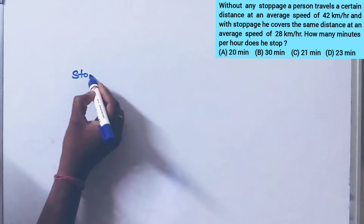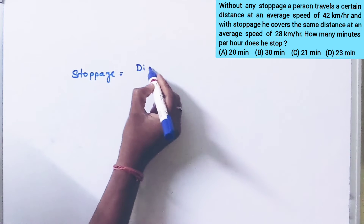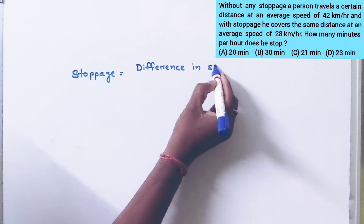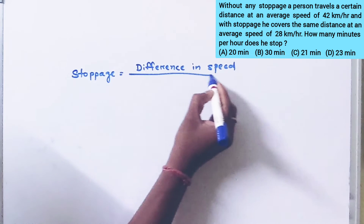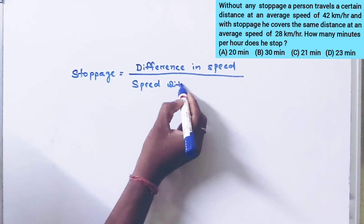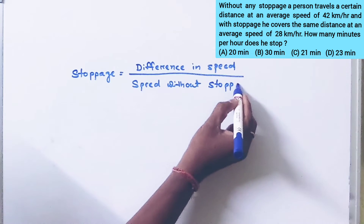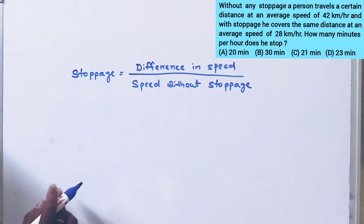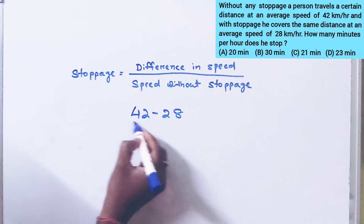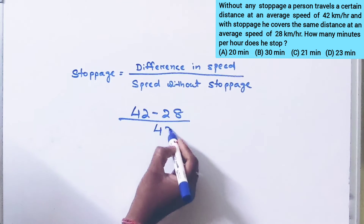Stoppage is equal to difference in speed divided by speed without stoppage. So the difference in speed is 42 minus 28, divided by the speed without stoppage, which is 42 km.